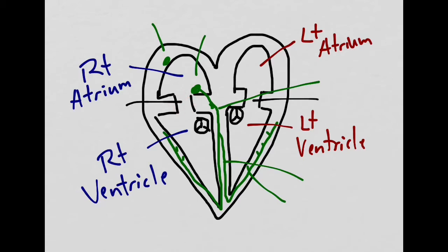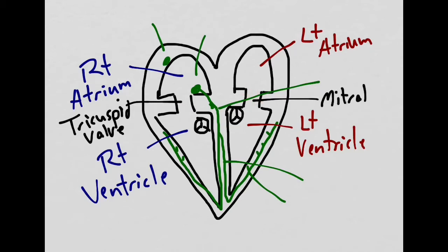The atrioventricular valve on the right side is called the tricuspid valve. The atrioventricular valve on the left side is called the bicuspid valve or the mitral valve.